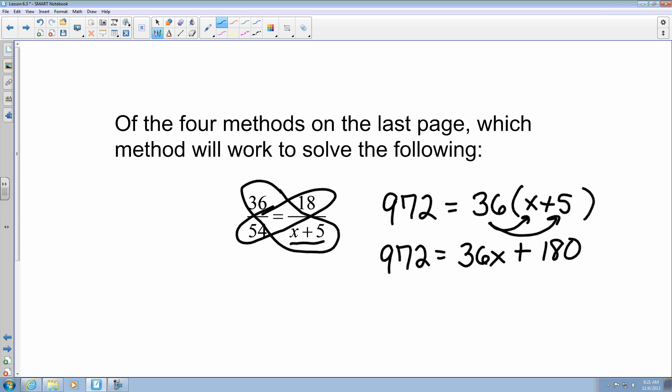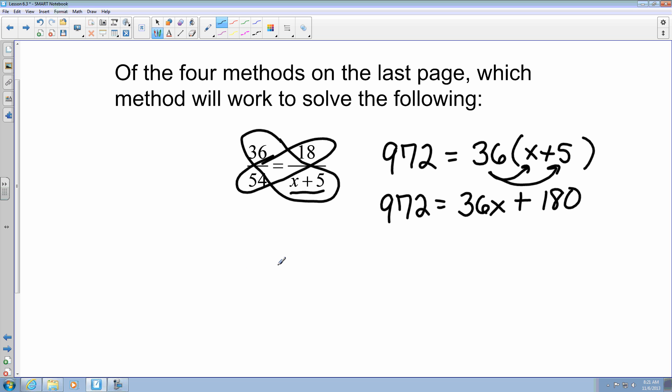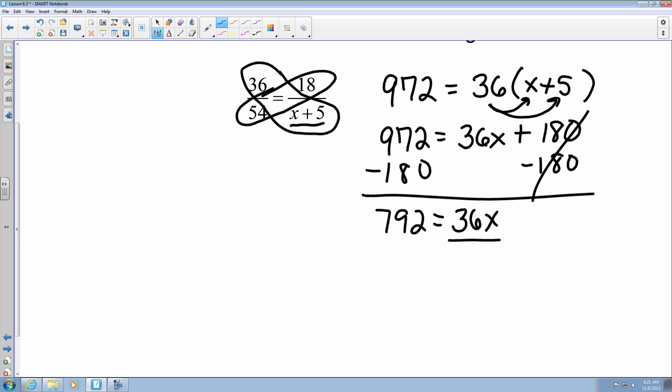Now what I have is an algebraic equation from what we had in previous chapters. This is just now our basic two-step equation. So I'm going to subtract both sides by 180, so I can cancel that out. So 972 minus 180 gives me 792 equals 36x. Now that I got it to this point, it looks like what we did with the proportions with just one term. So now I'm just going to divide both sides by 36, and then x equals 22.